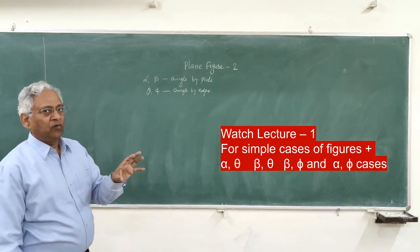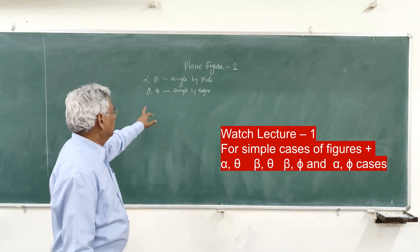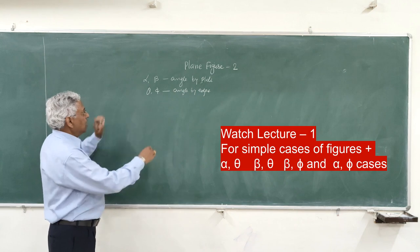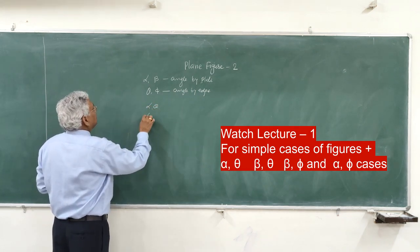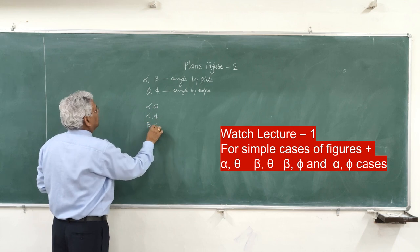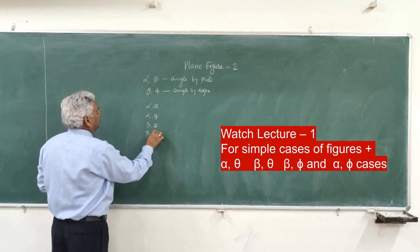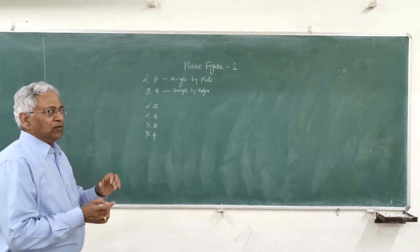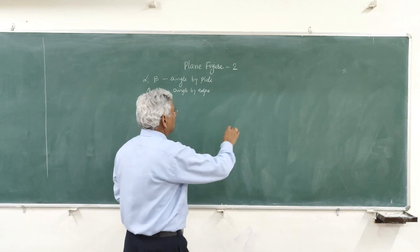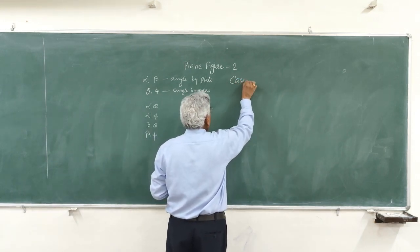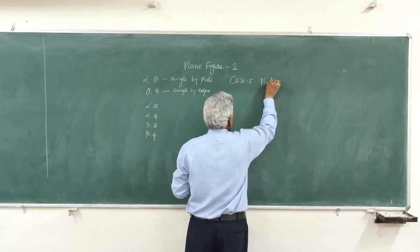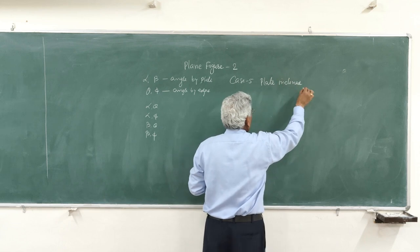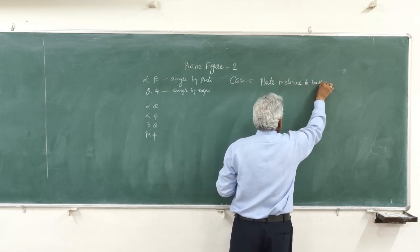As with a line, the angle made by the line with the plane is shown by theta or phi, and the angle made by the plate is alpha or beta. In the last class, we discussed the alpha-theta case, alpha-phi case, beta-theta case, and beta-phi case. You can refer to that session for understanding these cases. Now, let us say the plate is inclined — in case number 5, the plate is inclined to both HP and VP.